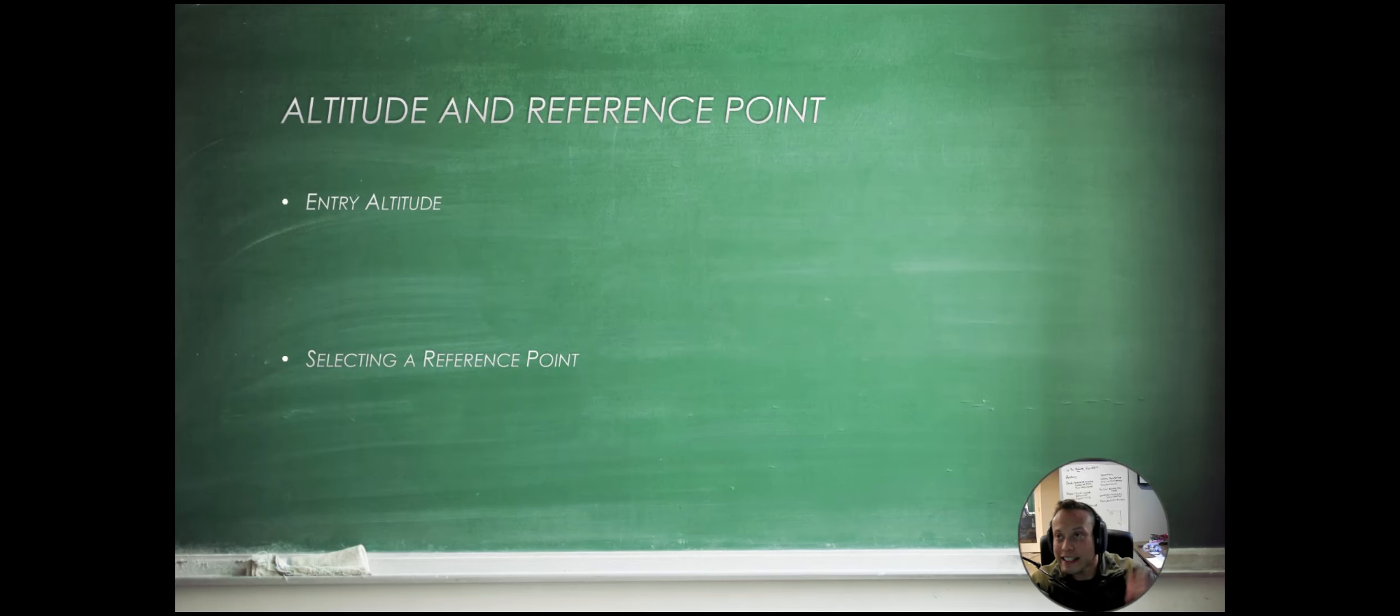Now we want to select an entry altitude like before. This is a ground reference maneuver, so I like to do it at 1,000 feet above the ground, but the ACS I believe says between 800 and 1,200 feet. I like 1,000 because that's the traffic pattern altitude. Like before, we want to select a reference point.